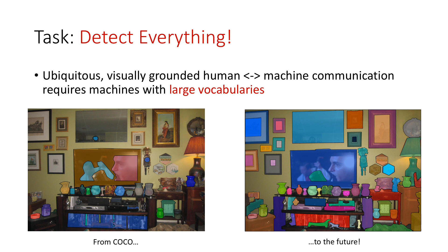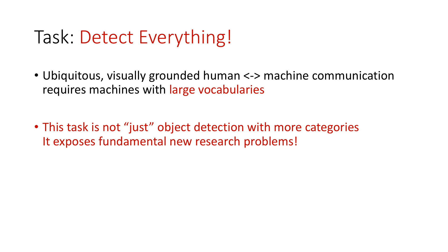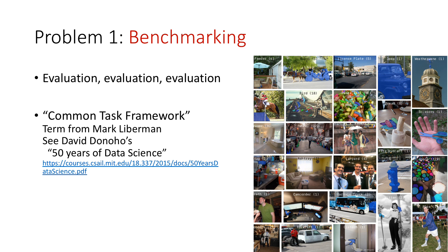Our goal in the ELVIS project was to provide a dataset and benchmark for research on this scenario. We want to take the field of object detection from the world of COCO, with its 80 categories, into the future, where detectors will be able to detect thousands of different object categories — that is, we want to support the task of detecting everything in an image. On the surface, this might appear to be just about increasing the number of classes that a detector outputs. However, it exposes fundamental new research problems, and I'll spend the rest of the talk talking about two of these: benchmarking and data-efficient learning.